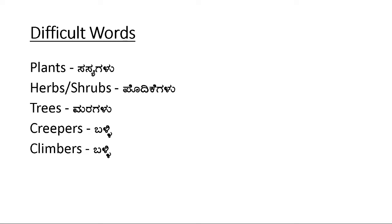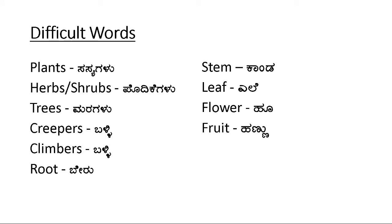Other words include root (beru), stem (kanda), trunk, leaf, flower (hu), and fruit (hannu). Trunk refers to stem. Clear with these words kids?